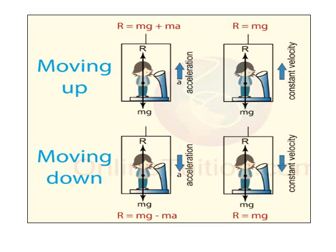Now, consider when the lift moves downwards with acceleration A. Then the net downward force on the man will be mg minus R equals to ma. That means the apparent weight R will be equal to mg minus ma.